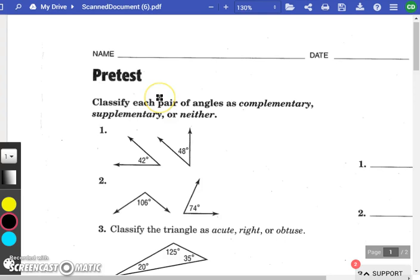Right off the bat, chapter 7 is going to ask you what is the difference between a complementary and a supplementary angle. One of the things I want you guys to try to remember is complementary is 90 degrees, the addition of two angles that equals 90 degrees, and supplementary is the addition of two angles that equals 180.